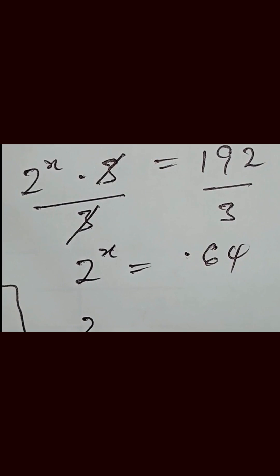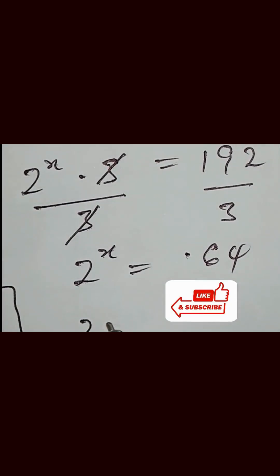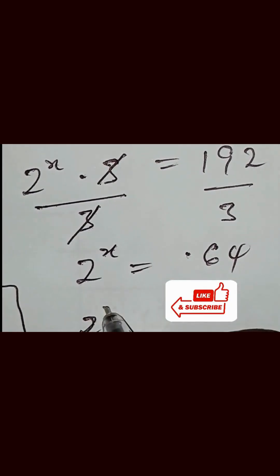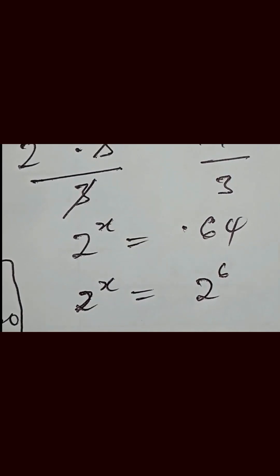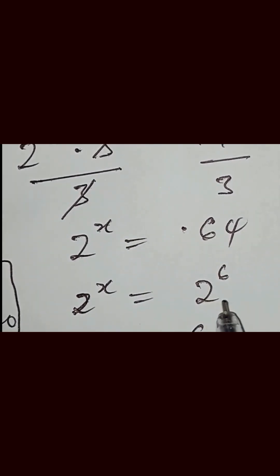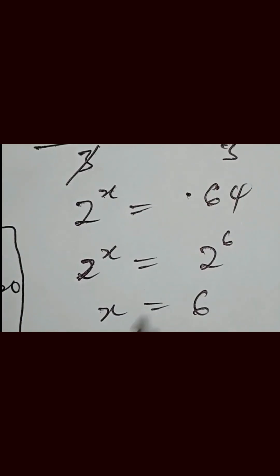So we now have 2 raised to the power of x equal to 64. We simplify 64, which gives us 2 raised to the power of 6. Since the bases are the same, we equate the powers, and x equals 6.